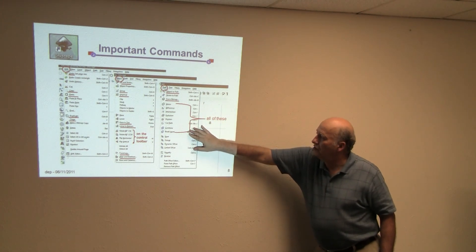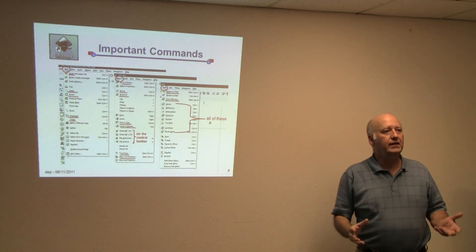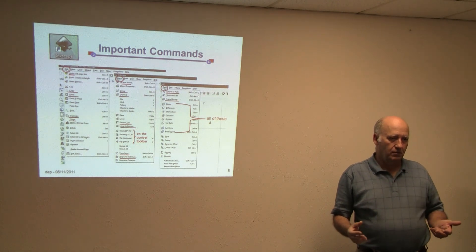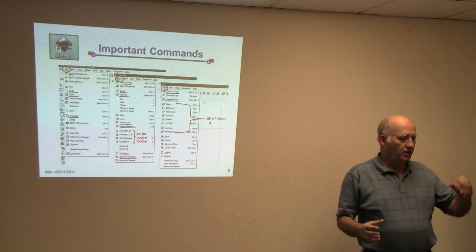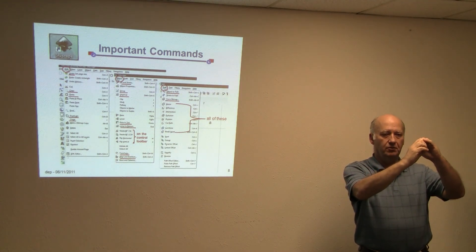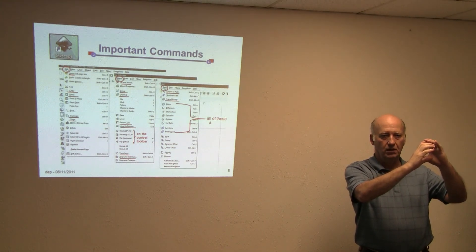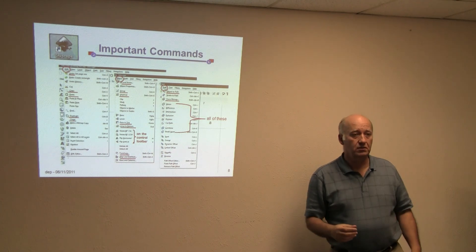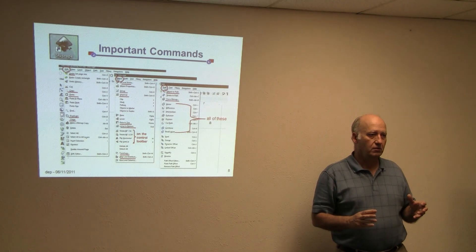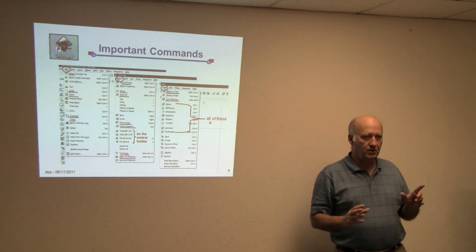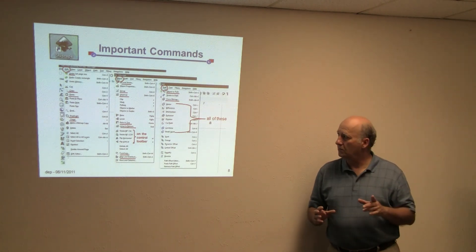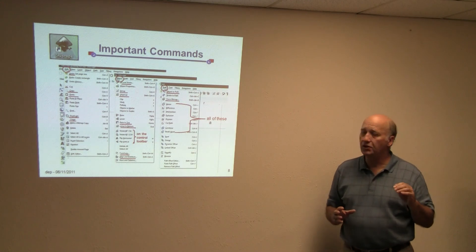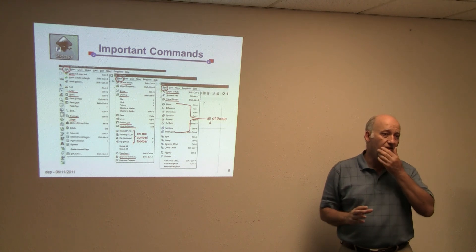These commands are often called the boolean functions — they're really the heart of a lot of things you can do with two objects. Some are easy to understand, like Union: you take two objects, put them over each other, hit Union, and now they become one object. Some, like Division, are a little more nuanced. The ones you'll use most are Union and Difference — probably 50 to 60% of the time. The others are important and you need to learn them.